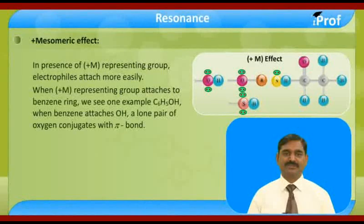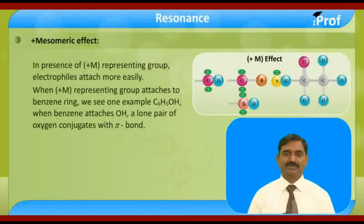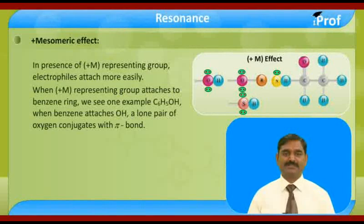When a plus M representing group attaches on the benzene ring, let us see one example. When C6H5OH — when benzene attaches OH — the lone pair of oxygen conjugates with the pi bond.